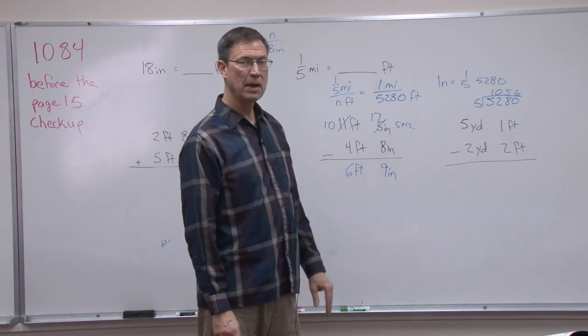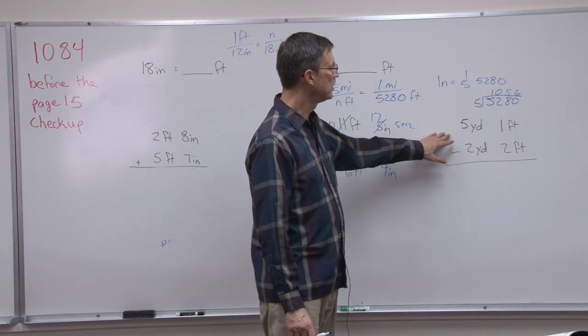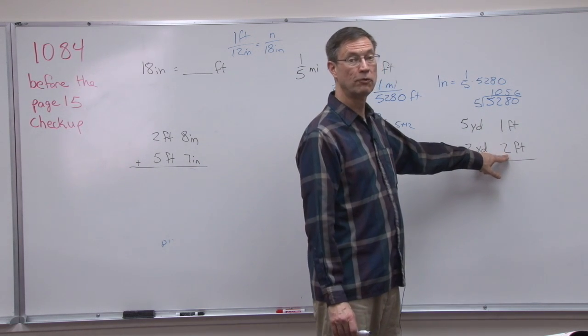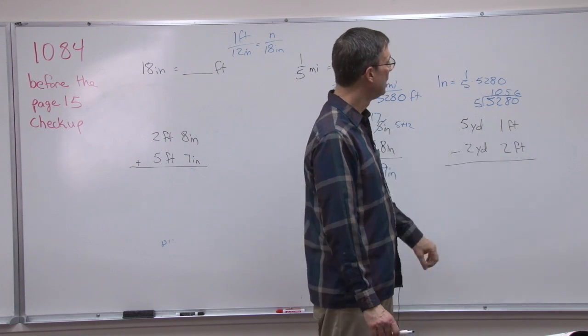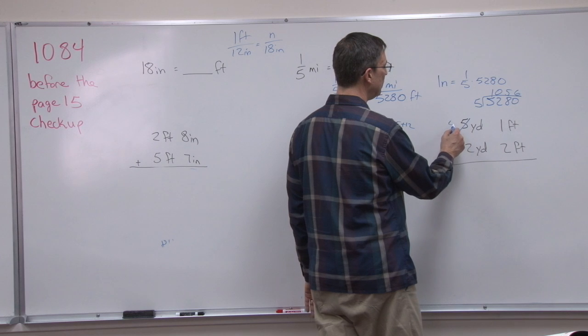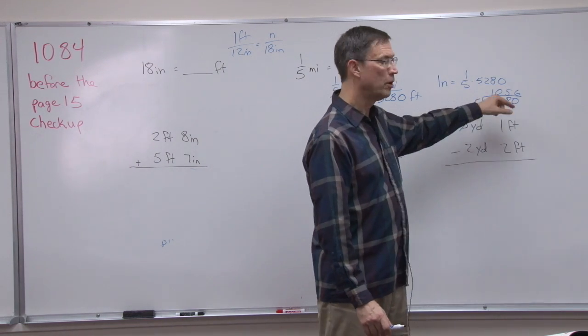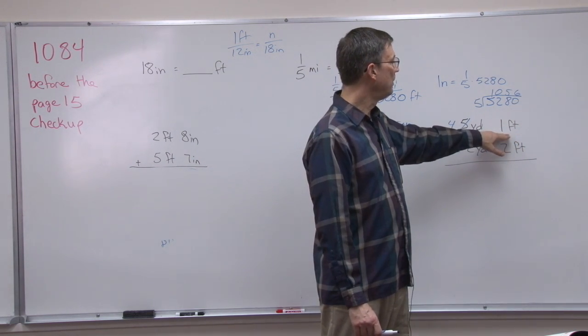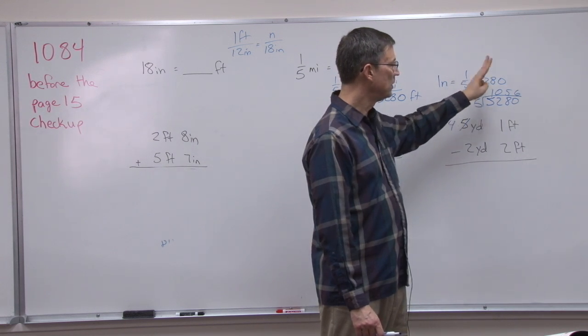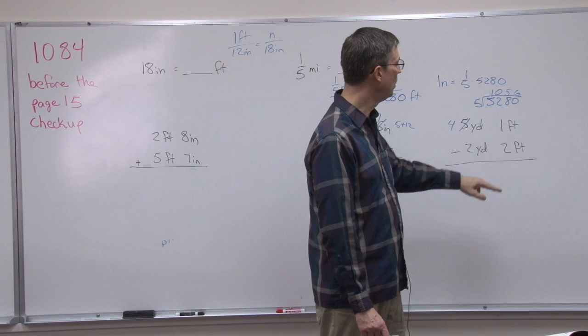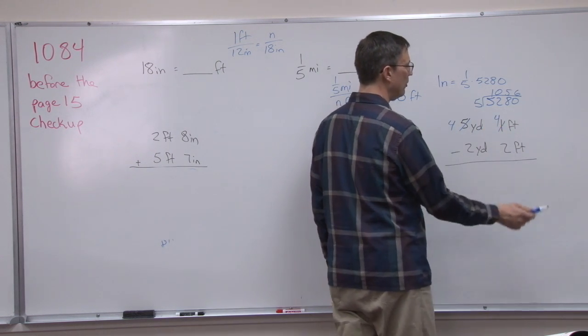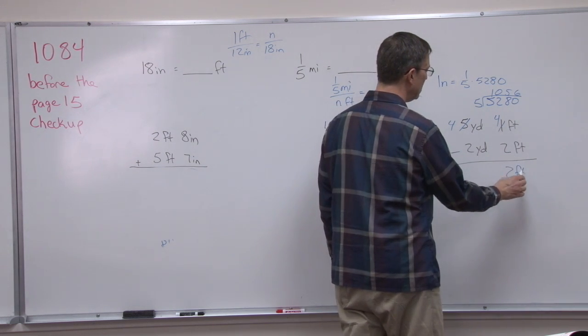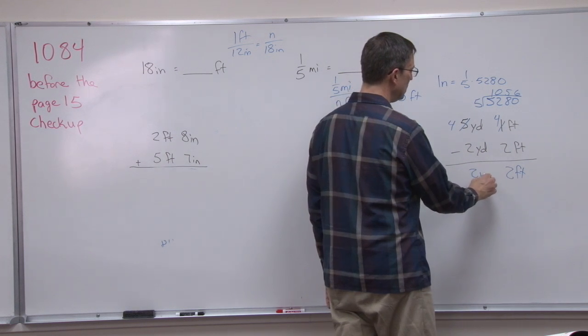So we've got several things here we're going to have on this checkup coming up. Here's another example. We're going to subtract feet and yards. But here again, I cannot subtract 2 feet from 1 foot. So I need to borrow 1 yard. So I'm going to make this a 4. But when I bring that 1 yard over, how many feet are in 1 yard? Again, I'm not going to use 10. I'm going to use 3 feet, because that 1 yard is the same as 3 feet added to the 1 foot makes this 4 feet. And now I can subtract 4 feet minus 2 feet is 2 feet. 4 yards minus 2 yards is 2 yards.